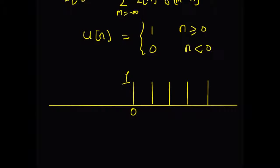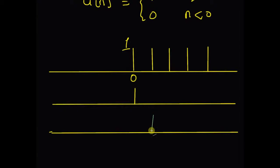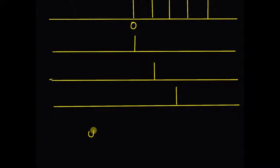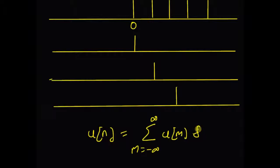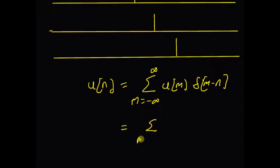We can clearly see that this unit step sequence can be decomposed as a linear combination of unit samples with weights equal to one. This is the value at zero, the value at n equal to one with weight equal to one, and the value at n equal to two, and so on up to infinity. So clearly, the unit step sequence u of n equals the summation m equal to minus infinity to plus infinity of u of m multiplied by delta of m minus n. From this decomposition, we can see that the value of u of m is nonzero only starting from m equal to zero, so the summation can also be written as sum m equal to zero to infinity of delta of m minus n.